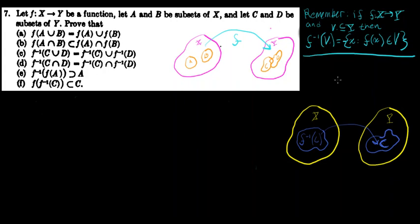Let me remind ourselves of what an inverse image is, both notation-wise, definition-wise, and pictorially. If V is a subset of Y, where F is a function that maps elements from X to elements in Y, and V is a subset of this codomain Y, then the inverse image of V under F is all the x in X such that F(x) is in V — all the x in X that are mapped by F and end up in V after being mapped by F.